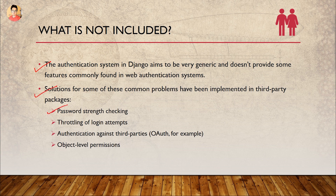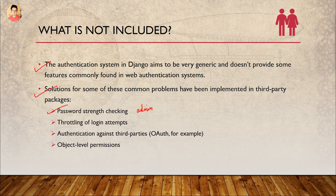One feature not included is password strength checking. If you try to input a password like 'admin', it does very basic password strength checking in Django — but there's no advanced password strength checking. It doesn't tell you whether your password is weak, moderate, or very strong. Somebody might sign up with a very weak password and get hacked. But you can encourage users to use strong passwords, and you can add this as another layer inside your views.py file — for example, check if the password is not at least eight characters long and tell the user they need a stronger password.